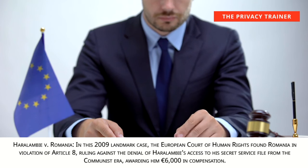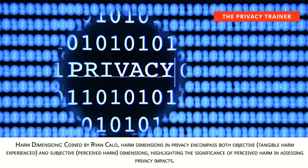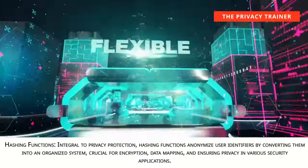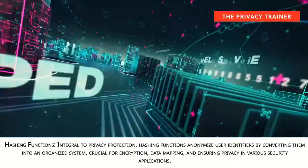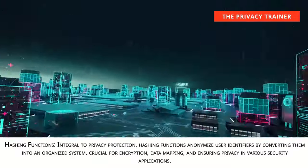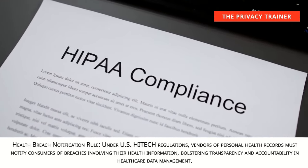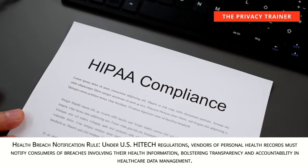Harm dimensions. Coined by Ryan Callow, harm dimensions in privacy encompass both objective, tangible harm experienced, and subjective, perceived harm dimensions, highlighting the significance of perceived harm in assessing privacy impacts. Hashing functions. Integral to privacy protection, hashing functions anonymize user identifiers by converting them into an organized system, crucial for encryption, data mapping, and ensuring privacy in various security applications. Health breach notification rule. Under US HITECH regulations, vendors of personal health records must notify consumers of breaches involving their health information, bolstering transparency and accountability in healthcare data management.